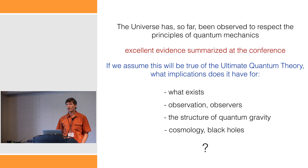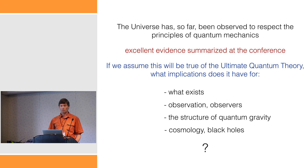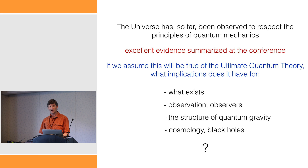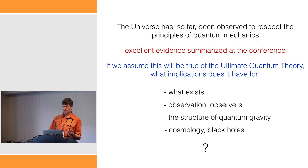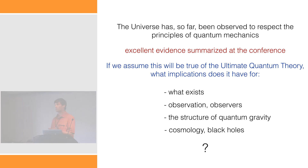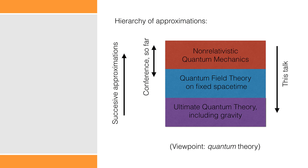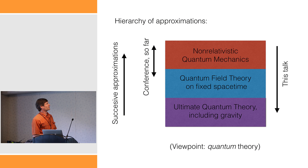If we assume that quantum mechanics is underlying the ultimate theory, what implications does that have for what exists, observation and observers, the structure of quantum gravity, cosmology and black holes, and so on. So, first, a road map of the current state of physics and hierarchies of how we discuss things — there's actually a hierarchy of approximations.